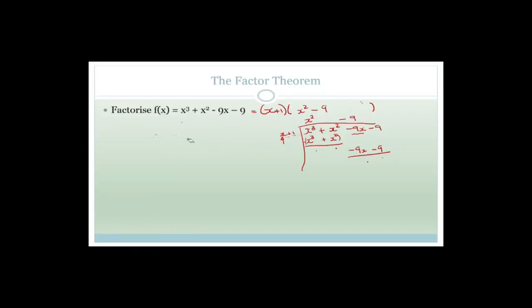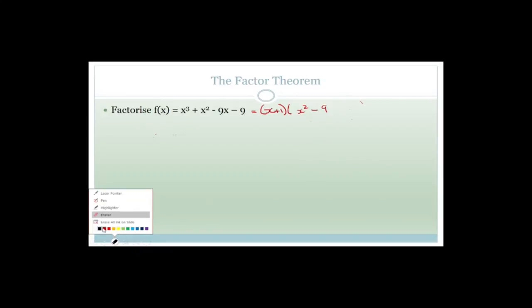So that's the long division method. Grade 12s, I don't mind if you use long division or the bridge method - I just care that you get it right. Now x² - 9 is a difference of two squares, so it becomes (x - 3)(x + 3). So the three factors are (x + 1)(x - 3)(x + 3), meaning this polynomial cuts the x-axis in three places.